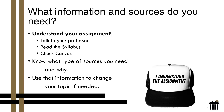So what information and sources do you need for your assignment? The first thing to do is understand your assignment — talk to your professor, read the syllabus, check Canvas. Depending on your assignment, you will need different types of sources, and that will help you know what you're looking for. You can use that information to decide whether you want to change your topic or continue on with the subject that you're looking at.